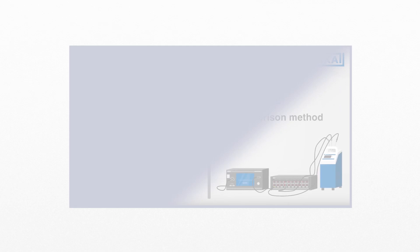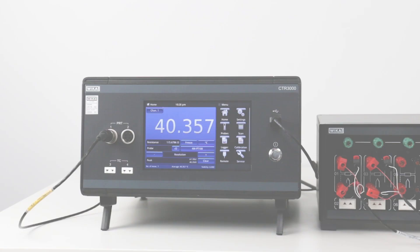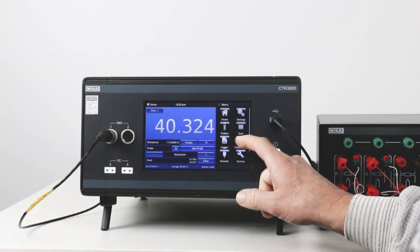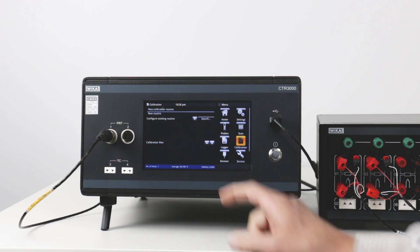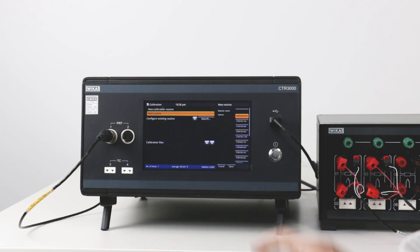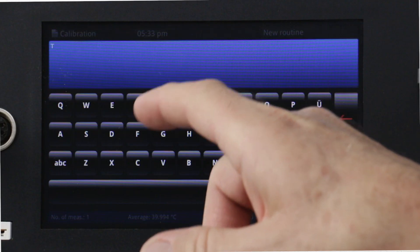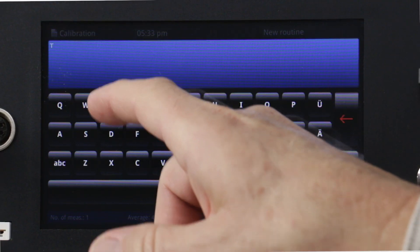An in-depth look at fixed point versus comparative temperature calibration methods is linked at the end of this video. The CTR3000 has an automation menu where all parameters are set in calibration test routines. Each routine can be named and saved for future tests.